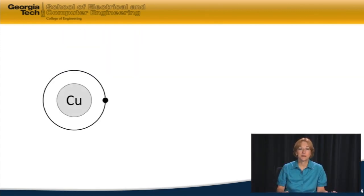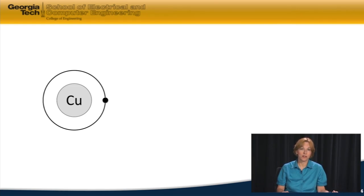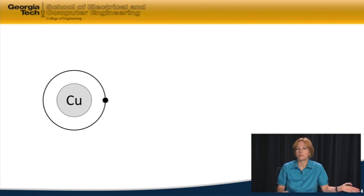Let's start with something simple — a metal, a conductor: copper. If you look at the structure of a copper atom, it's got one electron in its outer valence shell. And in this particular case, it's very easy — it takes very little energy to strip that electron away and have it free, so that it can flow through a metal wire and conduct electricity.